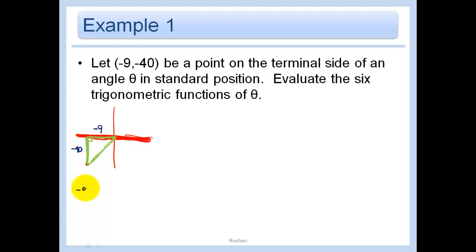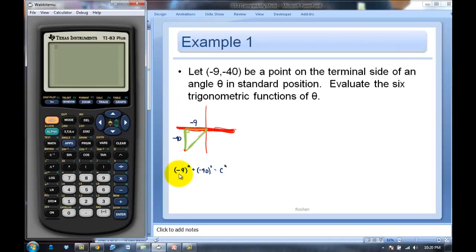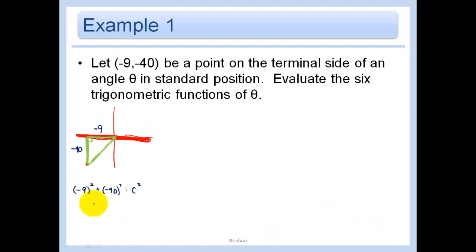We have to do a squared plus b squared equals c squared. If you're going to do negative 9 squared in your calculator, you must have those parentheses, otherwise you'll get the wrong answer. Plus negative 40 squared, then take the square root. I get 41. So c equals 41, and the hypotenuse is always going to be positive.